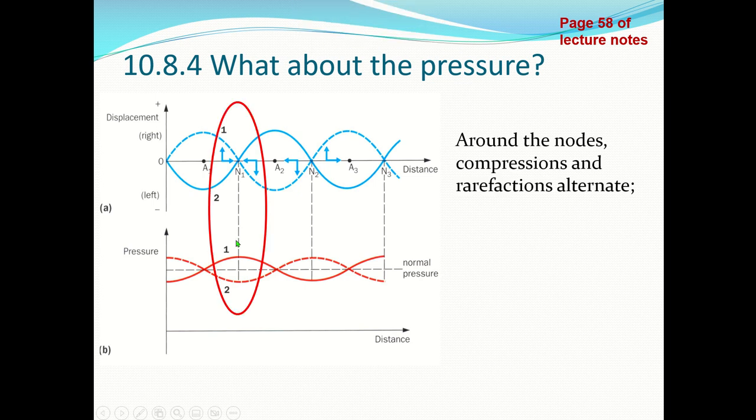What we notice is that around the nodes, at some point the air particles are all pushed towards the node, and half a period later the particles are always pushed away, because on either side of the node the displacement is always in the opposite direction. When the air molecules are pushed together we have high pressure, whereas when the air molecules are pushed away from the node we have low pressure.